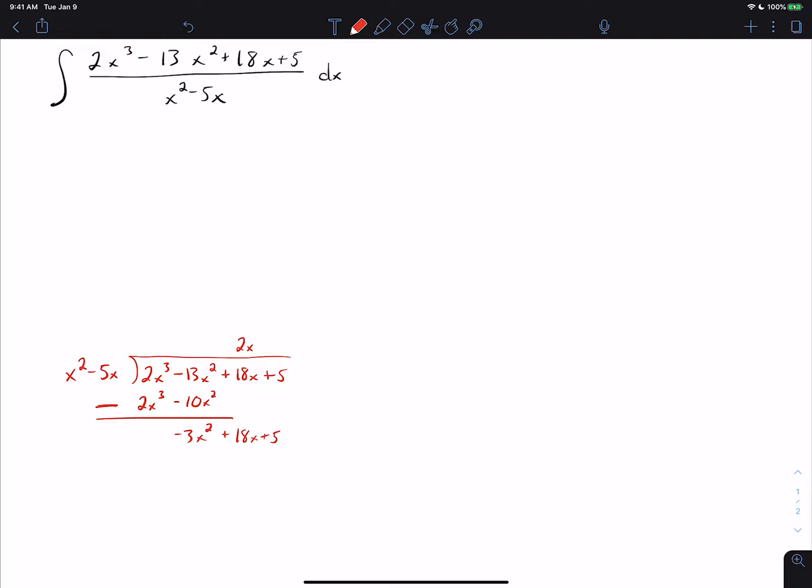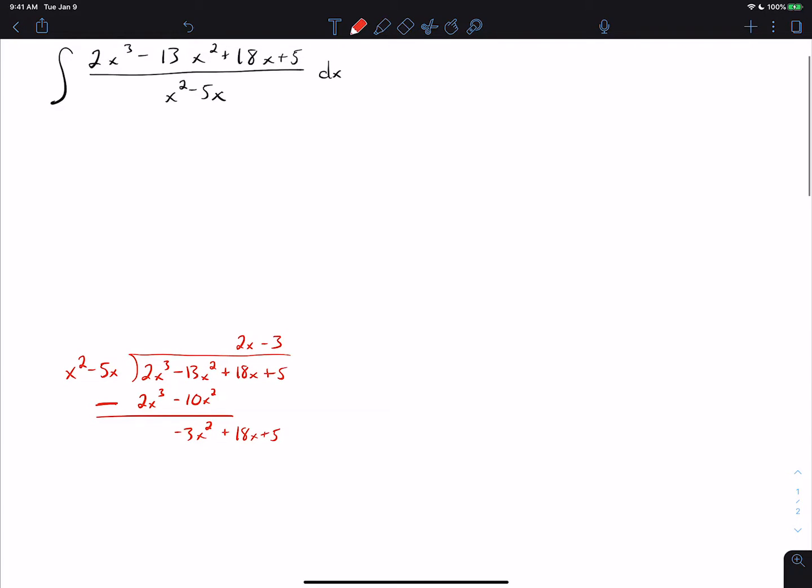Now we divide negative 3x squared divided by x squared. That's negative 3. We multiply negative 3 times the terms on the outside. That gets us negative 3x squared plus 15x and we subtract. That gets us 0 and then 3x plus 5. Now that the degree of what's left is smaller than the degree of the divisor, we're done. So 3x plus 5 is the remainder.